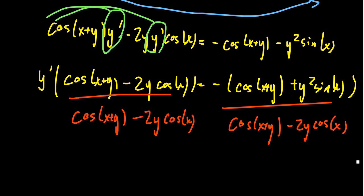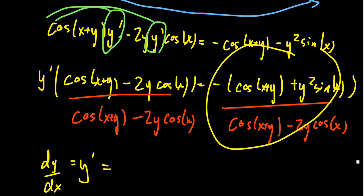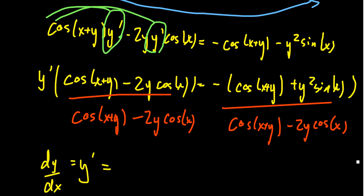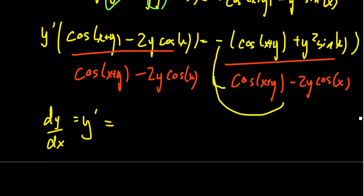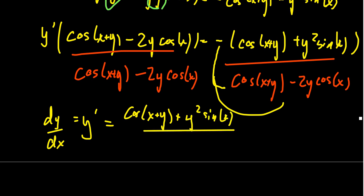The left-hand side now becomes y prime — which is just an abbreviation for dy over dx. On the right-hand side, to avoid the extra minus sign, I'm going to distribute the minus sign across the denominator. Since multiplying by negative 1 is the same as dividing by negative 1, you can distribute the negative sign. The numerator becomes cosine of x plus y plus y squared sine of x, and the denominator becomes 2y·cosine of x minus cosine of x plus y.